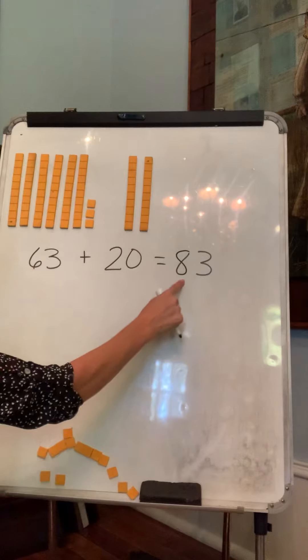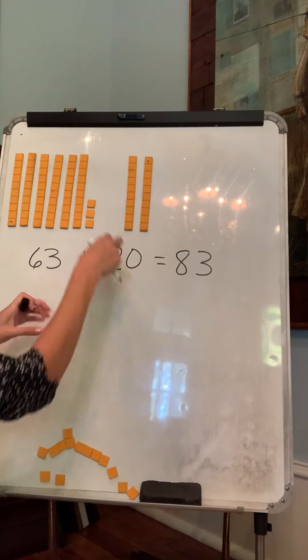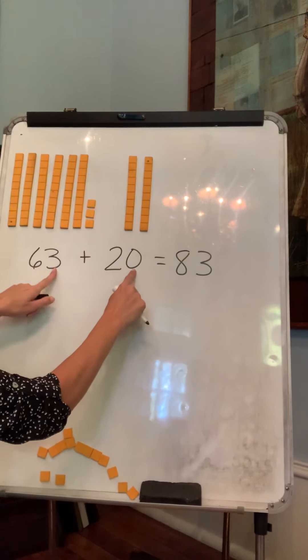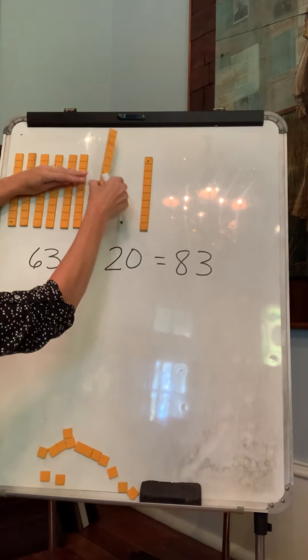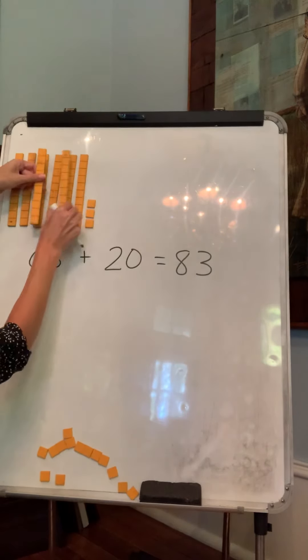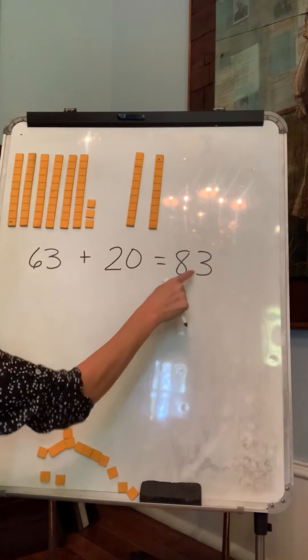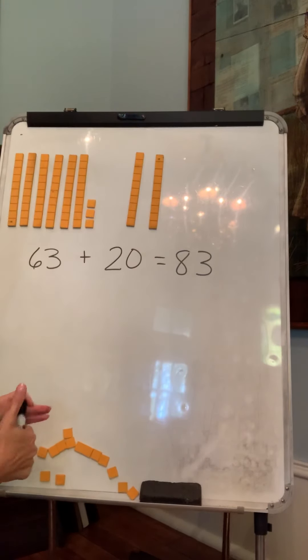So we have 83. We're adding our, we're putting our tens together and we're keeping our ones together. All together, we have eight tens and three ones. All right. Let's try a different one.